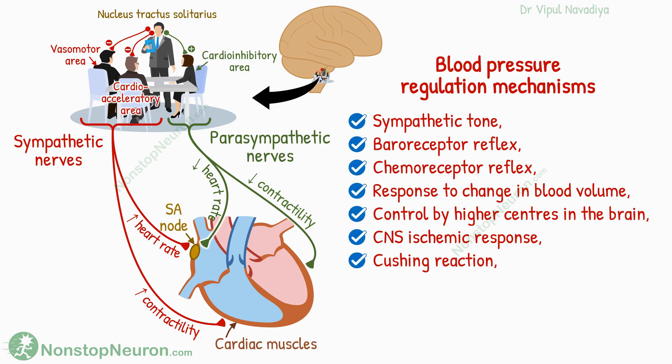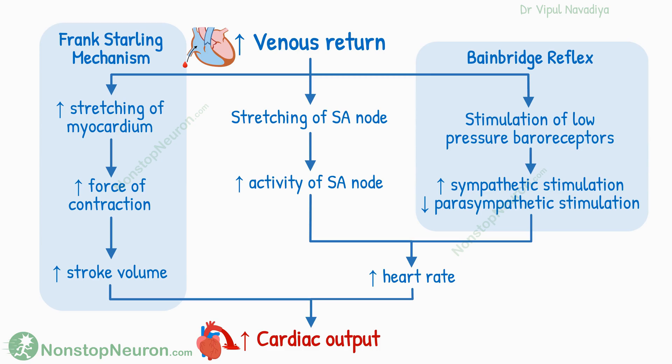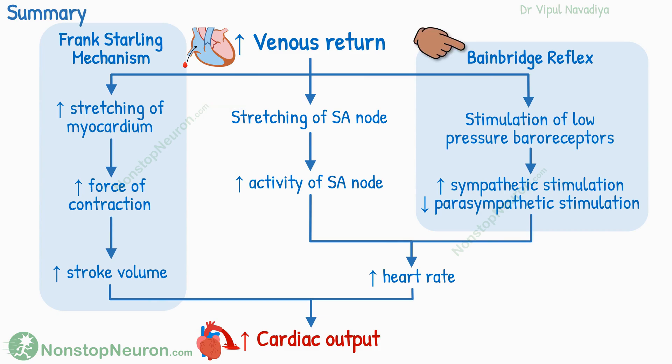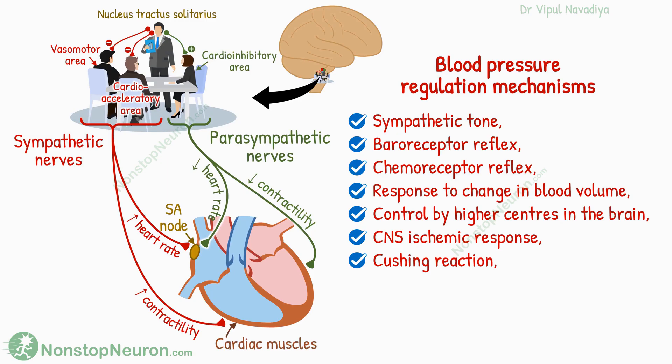These mechanisms are already explained in detail in the video on regulation of blood pressure, so we won't repeat them either. This was all about regulation of cardiac output. Here is a quick summary: the main factor controlling cardiac output is venous return. Increasing venous return increases cardiac output by the Frank-Starling mechanism, direct stretching of the SA node, and Bain-Bridge reflex. Cardiac output is one of the important determinants of blood pressure, so it's also regulated as part of blood pressure regulation mechanisms.